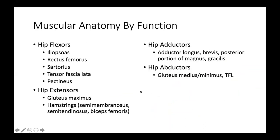Looking at muscles by function: hip flexors include the iliopsoas, rectus femoris, sartorius, tensor fasciae latae, and pectineus. Hip extensors include the gluteus maximus and the hamstrings. The hip adductors — which bring the hip in — are the adductor longus, brevis, posterior portion of the magnus, and gracilis. The hip abductors are gluteus medius, minimus, and tensor fasciae latae, as well as the short external rotators.